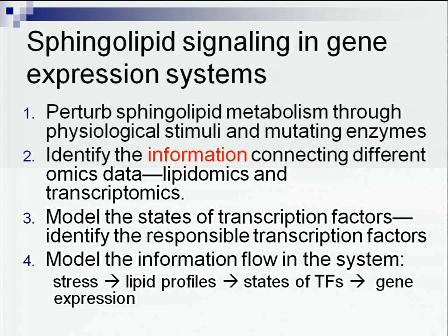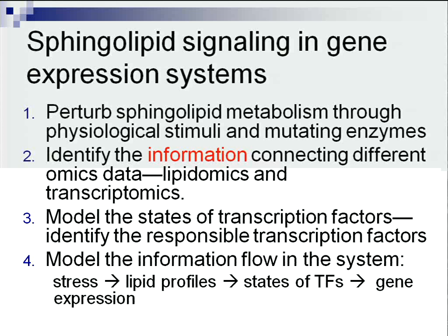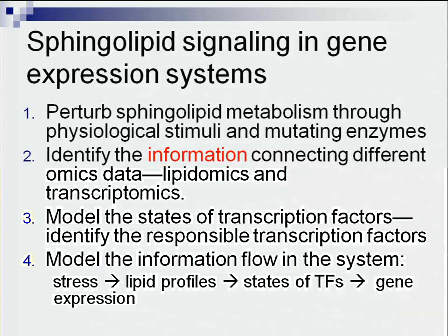The strategy we adopted is: first, we perturb the sphingolipid metabolites by physical stimulation - heat stress. And also, we clamped certain lipids by gene mutation. Then we began to collect both the lipidomic data and the gene expression data, which we can use in a modeling approach to identify potential information contained in the lipidomic data. We can then use a statistical model to model the activation states of transcription factors, and infer the information flow from the lipid stress to lipid profile, transcription factor state, and gene expression.